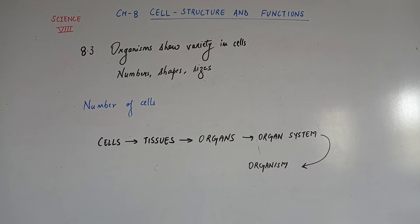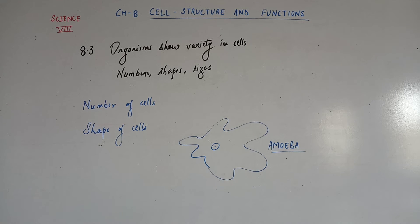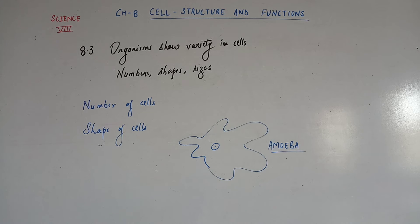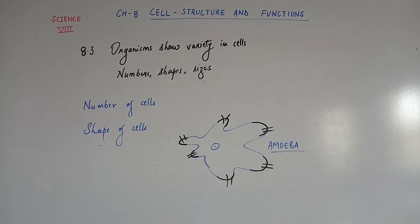Now let's move forward to the shape of cells. If we talk about the amoeba, what shape can we give it? Irregular — because the amoeba has no definite shape, unlike other organisms. If we look at the amoeba's projections, we will see they vary in size and shape.